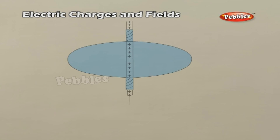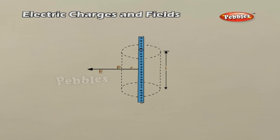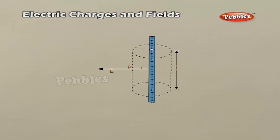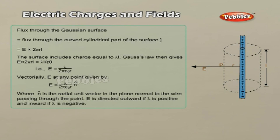Applications of Gauss's Law. Field due to an infinitely long, straight, uniformly charged wire. Consider an extremely long, thin, straight wire with uniform linear charge density lambda. Taking the radial vector from O to P and rotating it around the wire, points P, P', and so on are completely equivalent with respect to the charged wire. The electric field must have the same magnitude at these points and must be radial in direction. To calculate the field, imagine a cylindrical Gaussian surface. Since the field is everywhere radial, the flux through the two ends of the cylindrical Gaussian surface is zero.